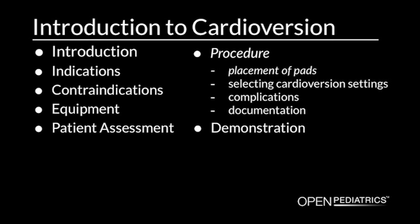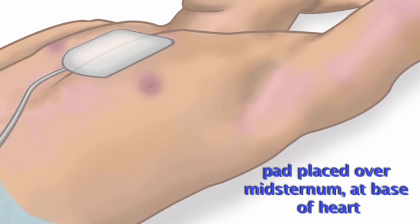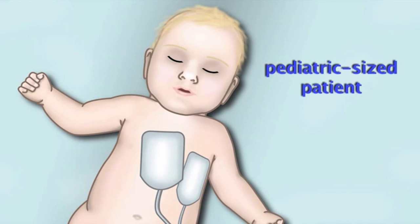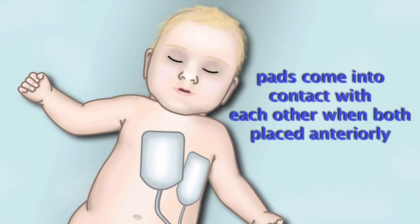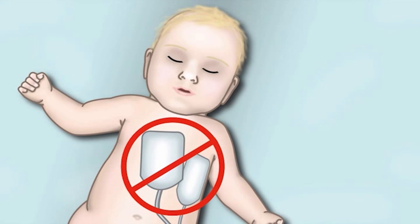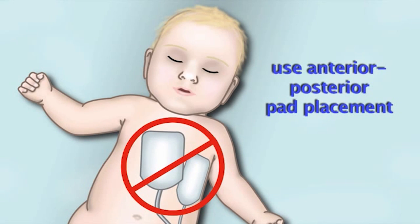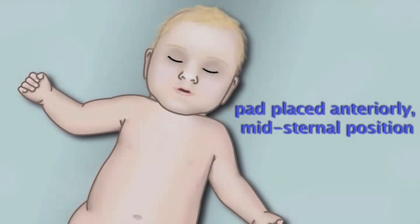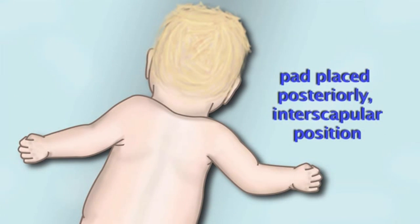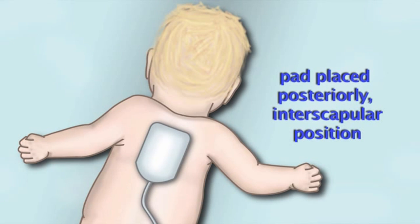For an adult-sized patient, place the pads over the mid-sternum at the base of the heart and the mid-axillary line over the apex of the heart. If you have a pediatric-sized patient and the pads come into contact with each other when placing both pads anteriorly, you should use the anterior-posterior pad placement, where one pad is placed anteriorly in the mid-sternal position and the other pad is placed posteriorly in the inter-scapular position.